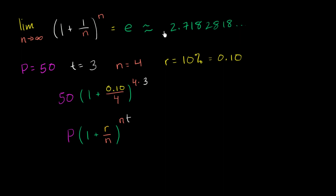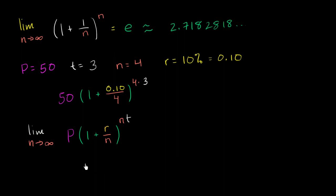Now, an interesting thing — we saw from a previous video where we took the limit as n approaches infinity. Let's do the same thing here and think about what that would mean. If we took the limit as n approaches infinity, we're dividing our year into more and more chunks — an infinite number of chunks. This would be the case of continuous compound interest, which is a fascinating concept: you're dividing your time period into an infinite number of chunks and compounding just an infinitely small extra amount every one of those periods. But you can actually come up with an expression for that.